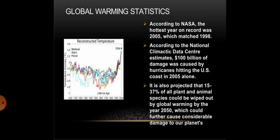There are some global warming statistics. According to NASA, the hottest year on record was 2005, which matched 1998. According to the National Climatic Data Center estimates, $100 billion of damage was caused by hurricanes hitting the U.S. coast in 2005 alone. It is also projected that 15 to 37% of all plant and animal species could be wiped out by global warming by the year 2050, which could further cause considerable damage to our planet, as shown in the figure.